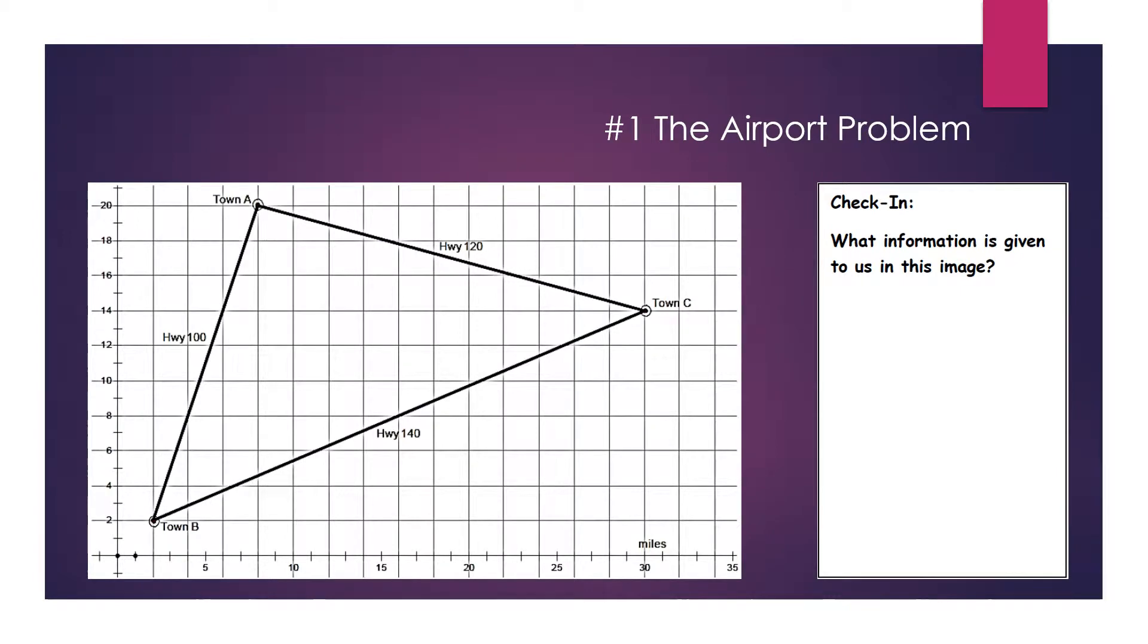Then we actually took a look at the actual question. So they were given two options. In the first option, their airport will be placed equidistant from the vertices, or towns in our case. In the second option, the airport will be placed equidistant to the highways, or the sides of this triangle.